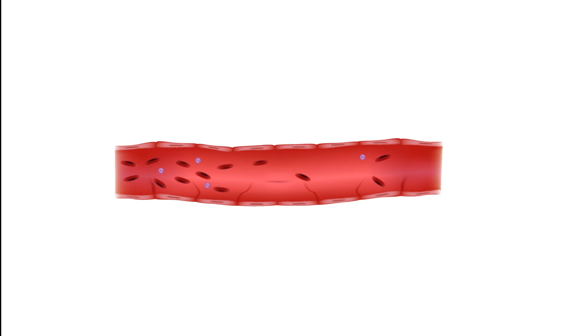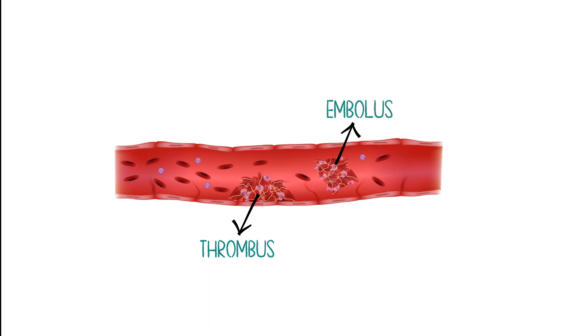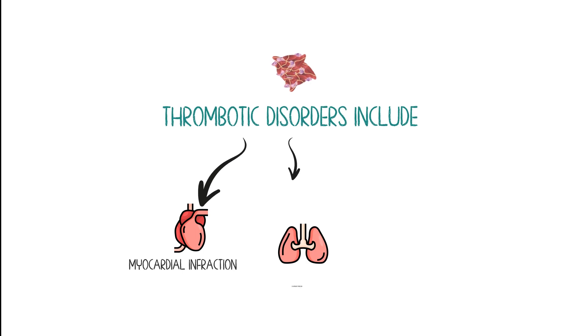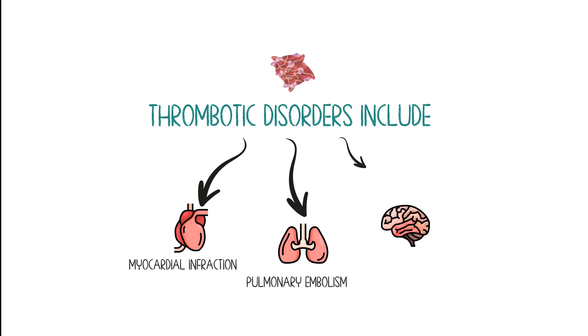Thrombosis is the formation of an unwanted clot within a blood vessel. When it adheres to a blood vessel, it's called a thrombus, but if it floats in the blood, it will be called an embolus. Thrombotic disorders include myocardial infarction, pulmonary embolism, and acute ischemic stroke.